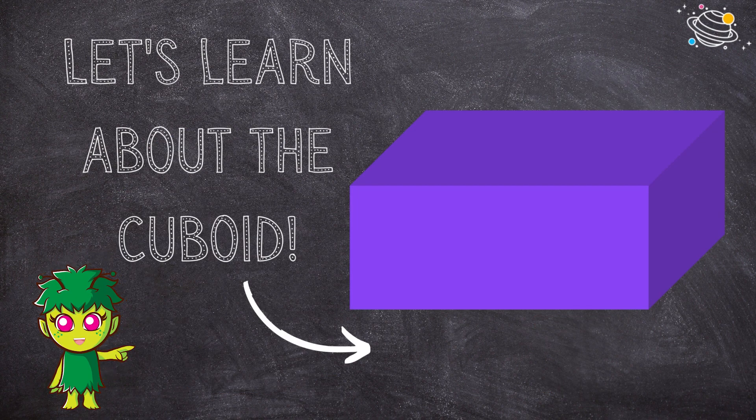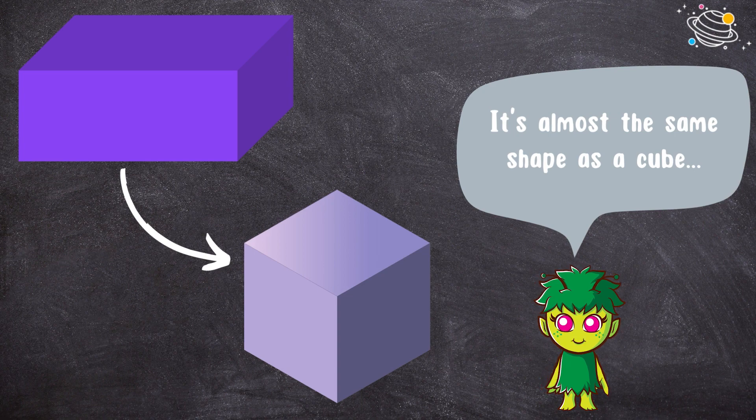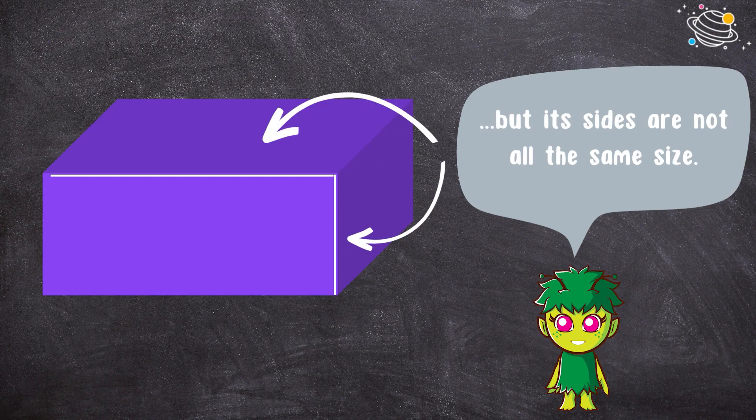Let's learn about the cuboid. It's almost the same shape as a cube, but its sides are not all the same size.